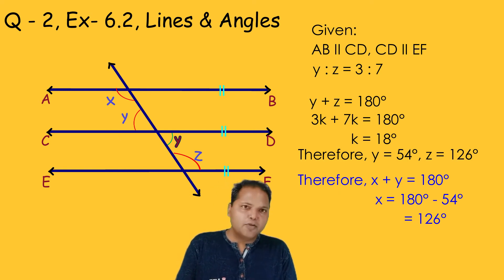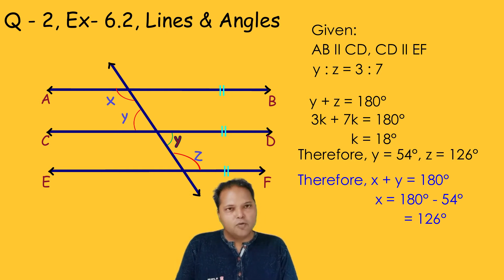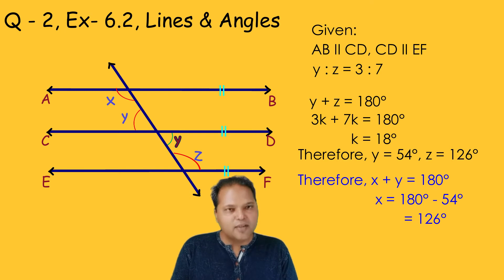We already have the value of Y, so X is equal to 180 degrees minus Y, giving us the value of X. This is how we have completed question number 2. Now let's move on to the next one.